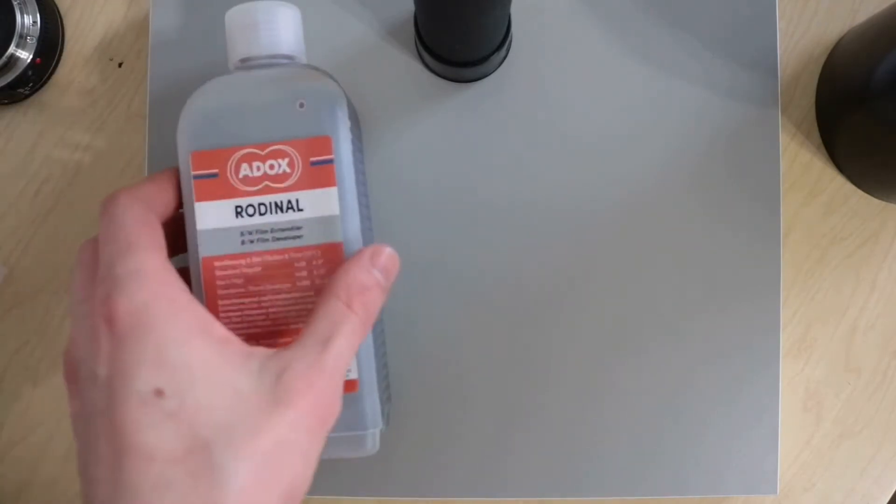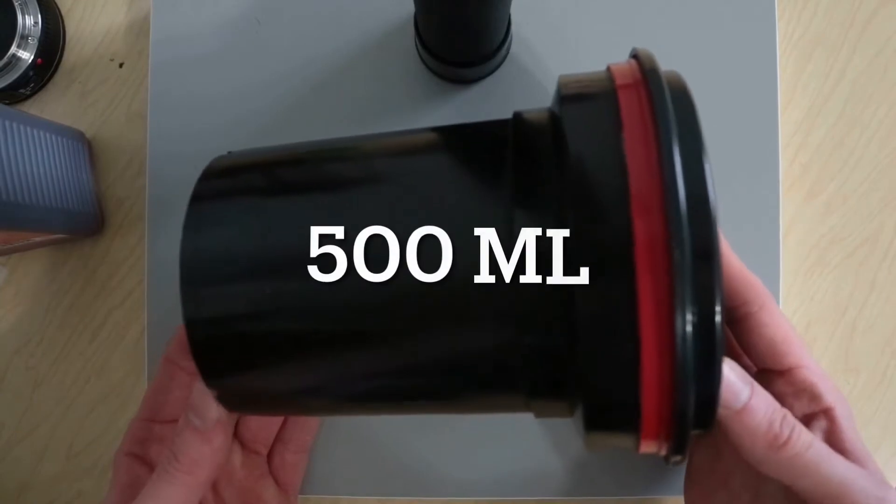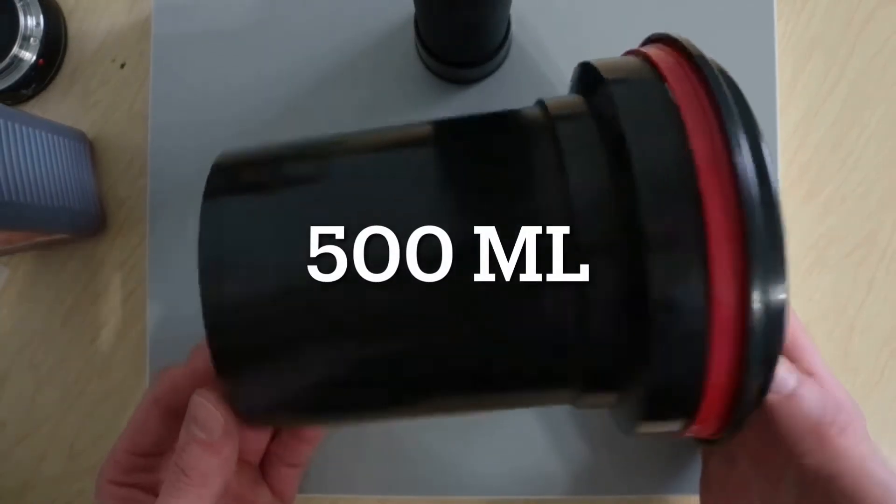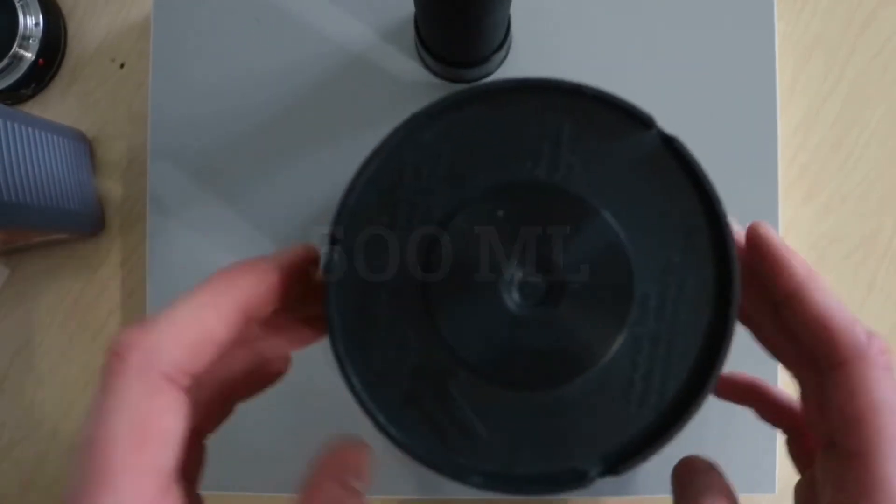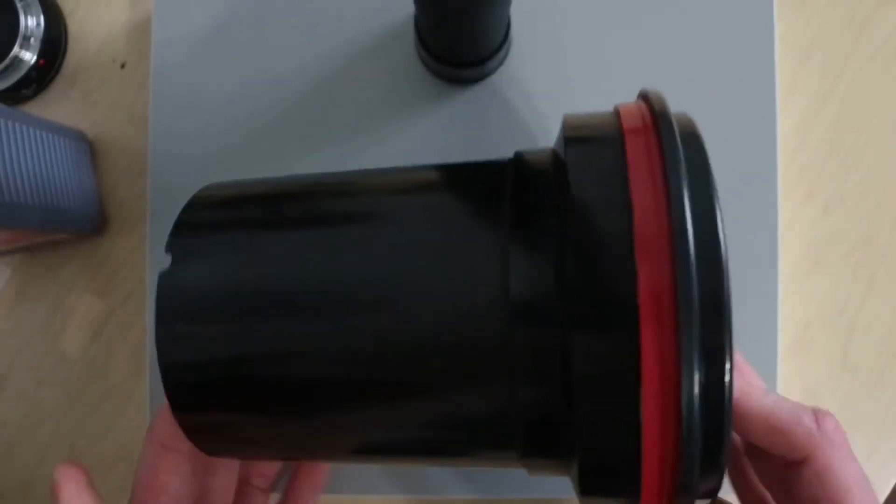So the first thing that you'll want to know is your final volume. I'll be using a Patterson tank in this video to demonstrate that. This tank holds 500 milliliters. If you have a different tank you'll just have to figure out how much your tank holds. But right here on the Patterson tank it shows the full volume that it holds right here on the bottom, and it says 500 milliliters.